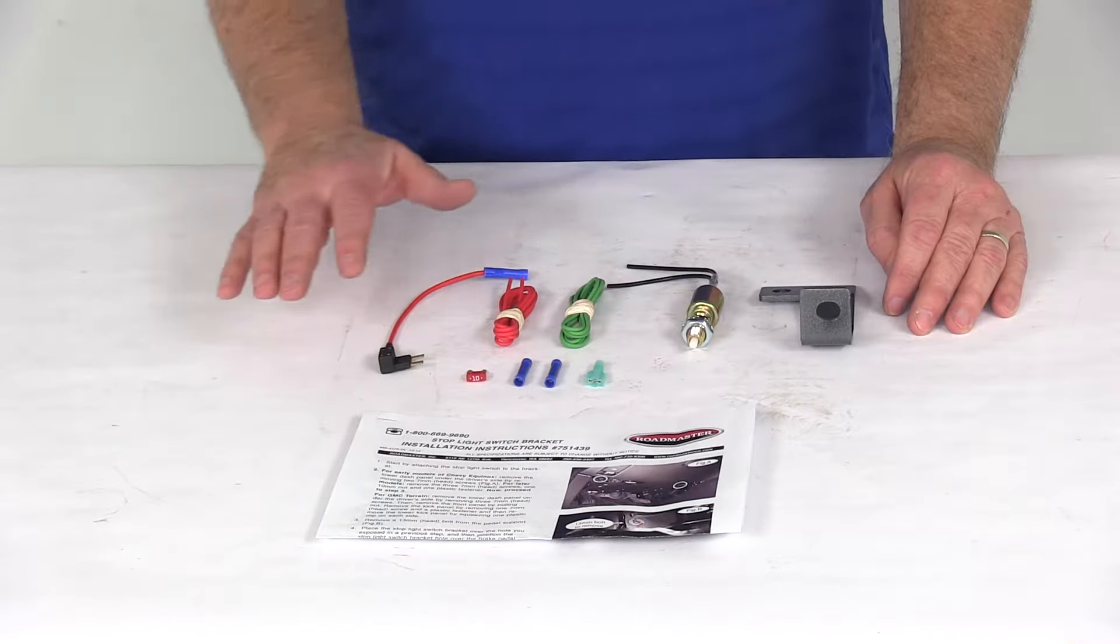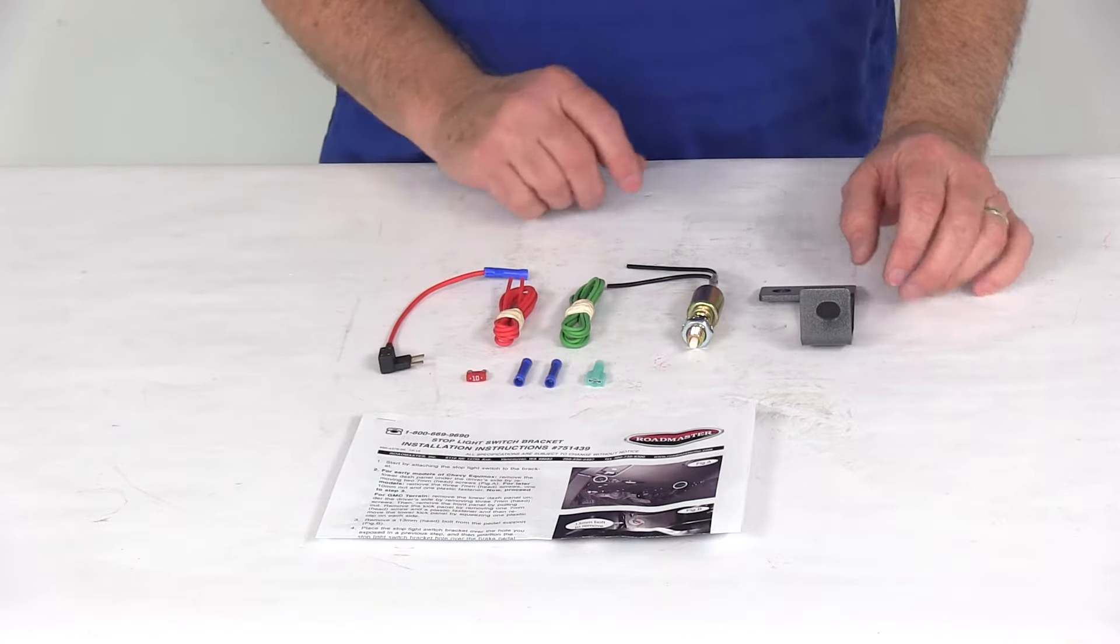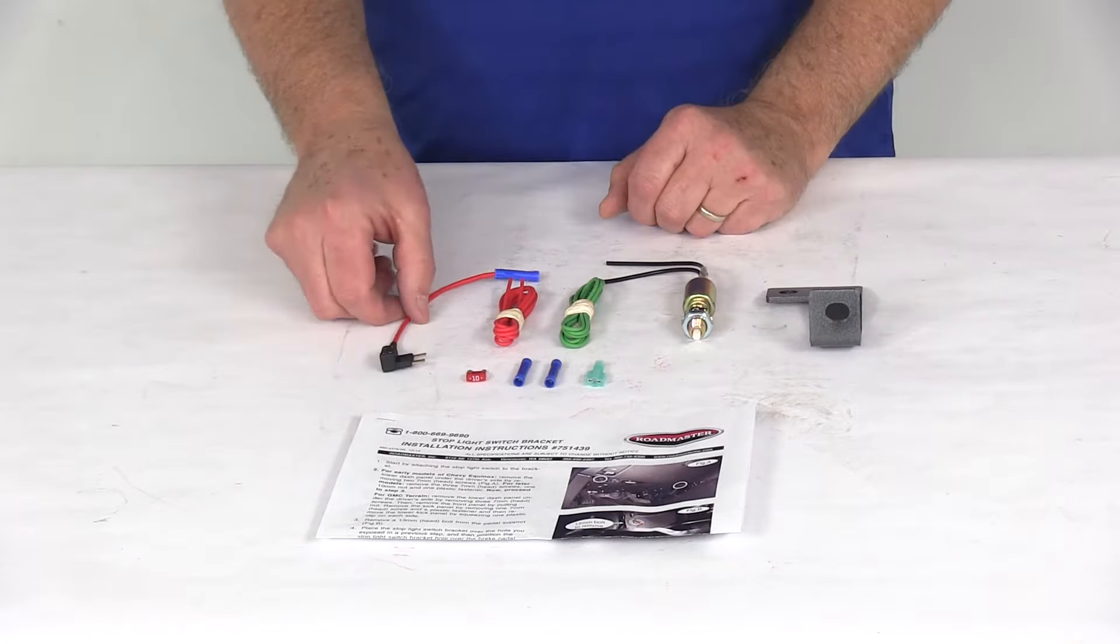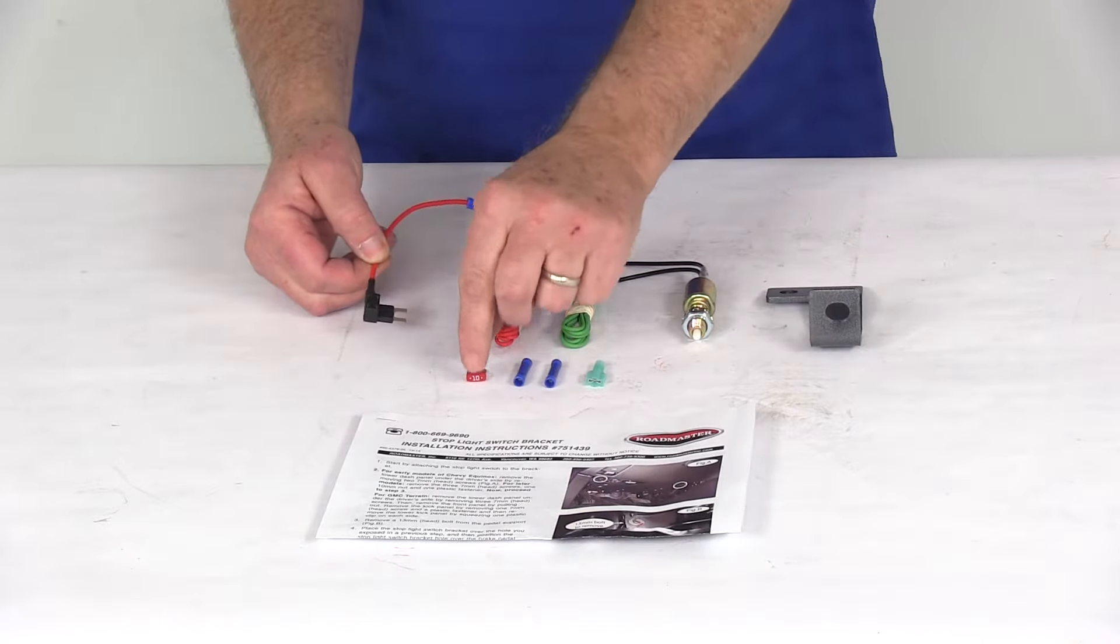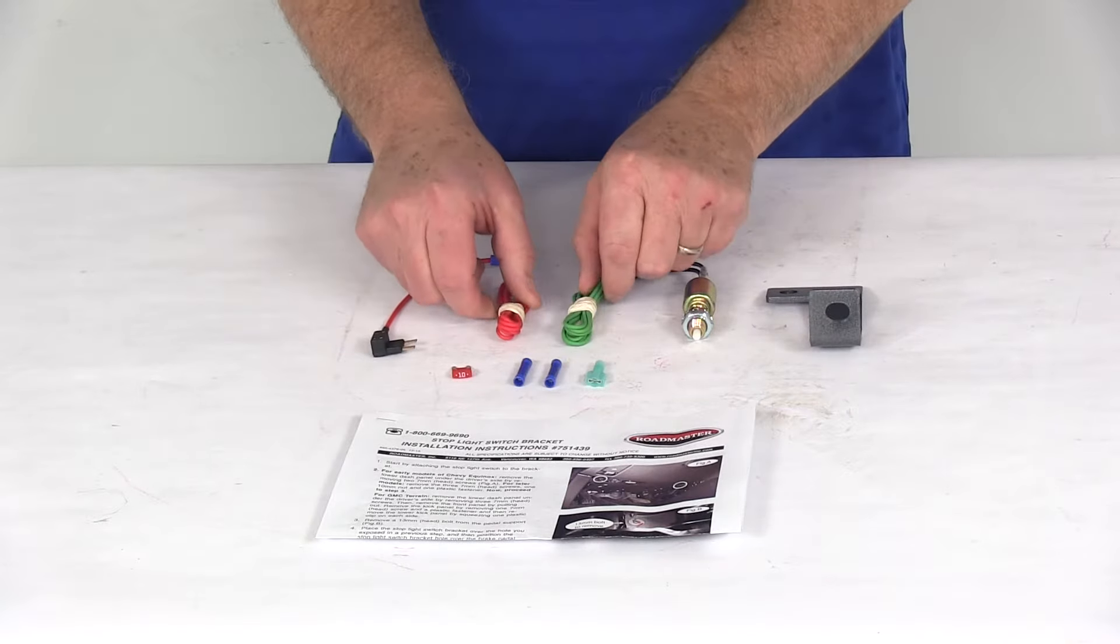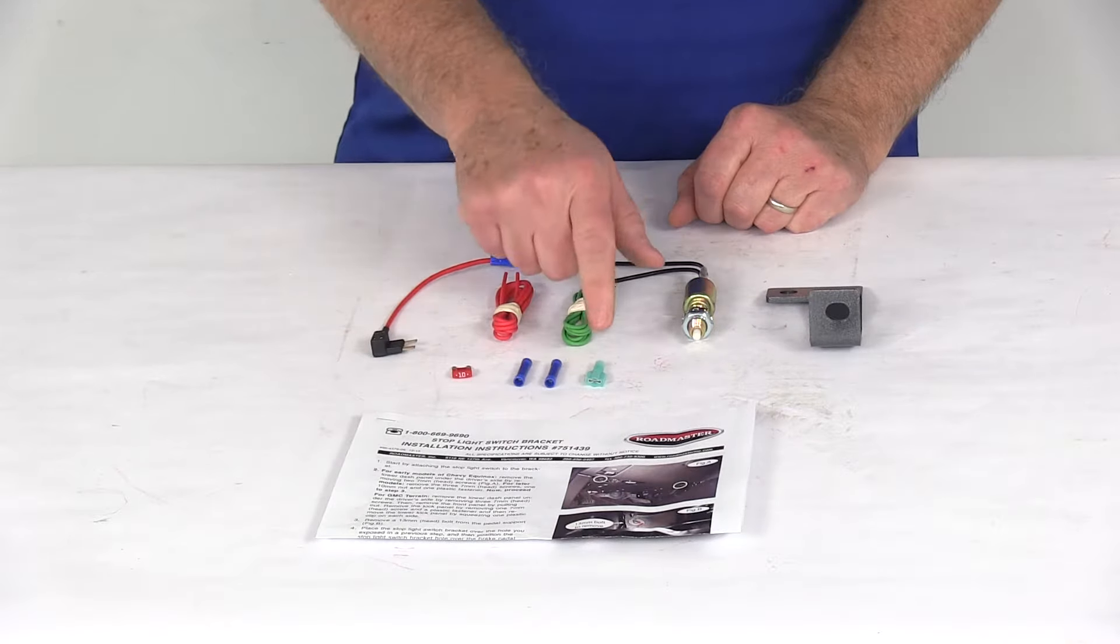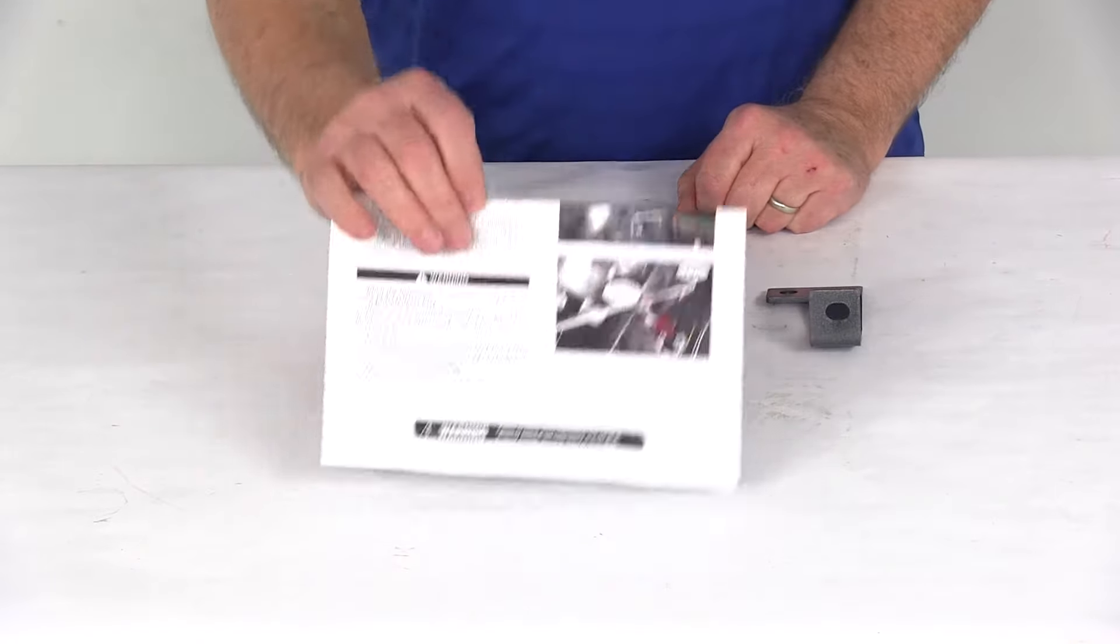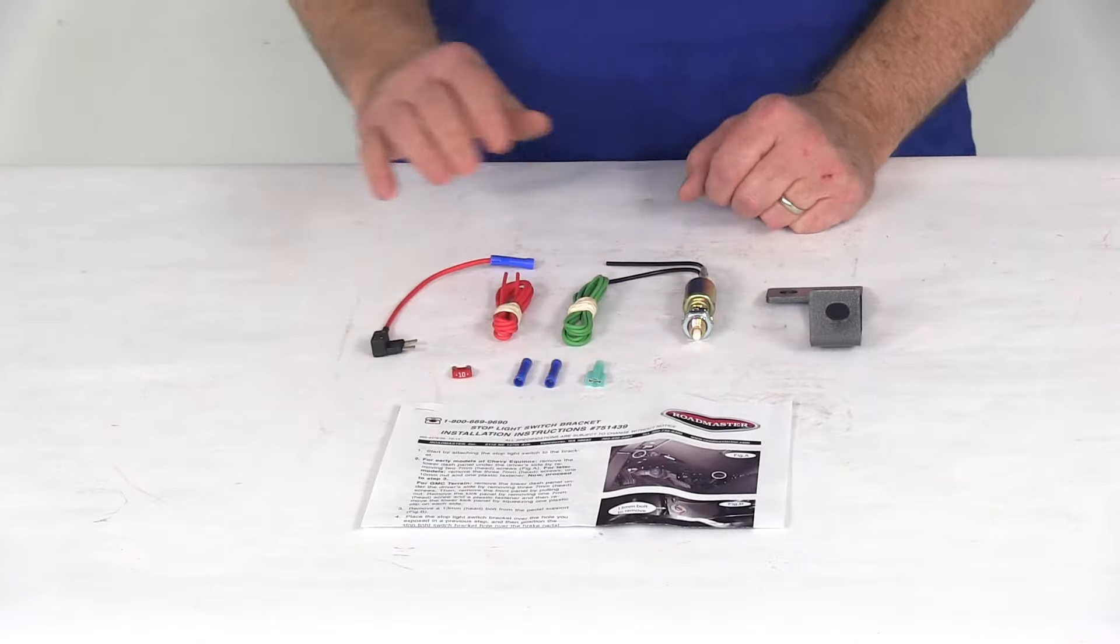This part here includes everything on the table. It includes the stoplight switch, the mounting bracket for that switch, this fuse tap with the included 10 amp fuse, a length of green wire and red wire, a couple butt connectors and another wire connector, and a nice set of detailed instructions that will describe how to install all this.